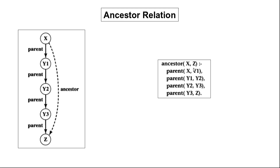What would be the stopping point if we keep going in this hierarchy of the family tree? There would not be any stopping point, so this would not be a good way to define the ancestor relation. However, a better way exists for handling any number of intermediate parents in the hierarchy, and that approach is by using recursive rules.